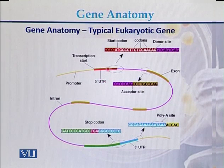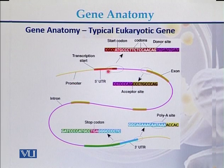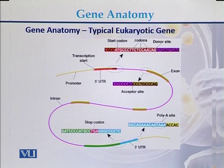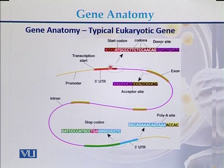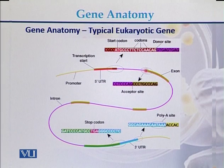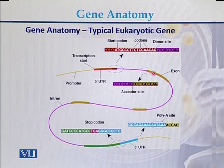The five-prime UTR region consists of exons and introns. At the coding region there is a start codon, followed by codons within the exons, and then there is a donor site marking the end of the exon. This region has been magnified where we can see the start codon, different codons, and then the donor site — meaning the end of the exon — followed by the connection between the intron and the next exon.